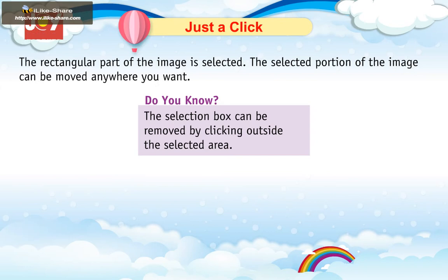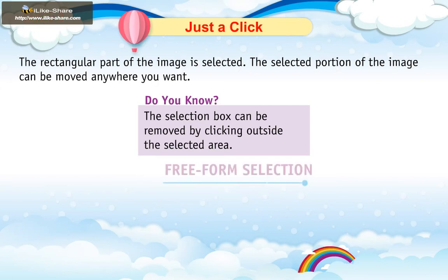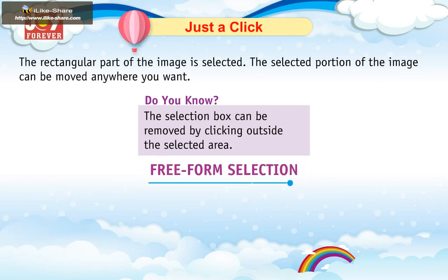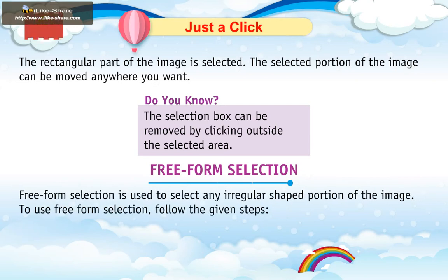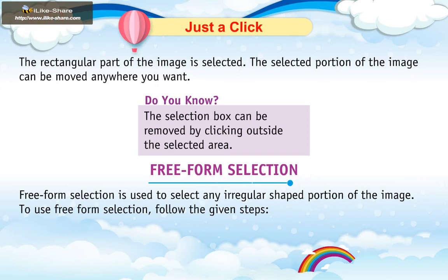Do you know? The selection box can be removed by clicking outside the selection area. Free Form Selection is used to select any irregular shaped portion of the image. To use Free Form Selection, follow the given steps.